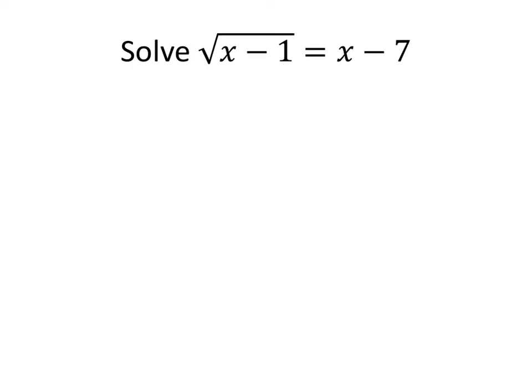We want to solve the equation: the square root of x minus 1 equals x minus 7. What we don't like about that equation is the square root, so the solution method is to square both sides and get rid of the square root. Our first step is to square both sides, which will eliminate the square root and leave us with a more conventional equation.